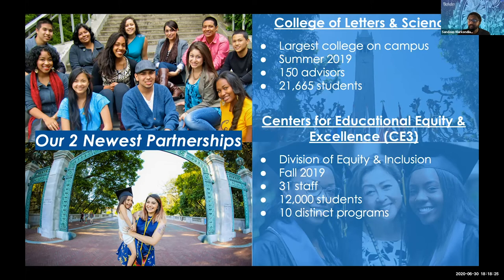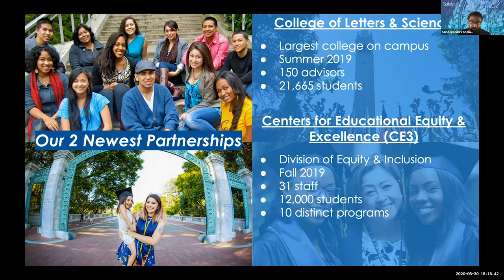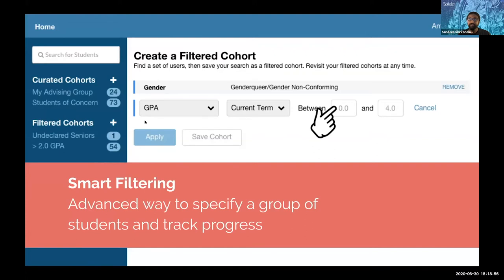Our newest partners are the College of Letters and Science — our biggest group — about 150 advisors and 22,000 students. In reality, we are touching most of the student population in combination across the colleges. We are also working with the Centers for Educational Equity and Excellence, mainly to identify students who are admitted or already in the system and how the division of equity and inclusion can help them by looking at their day-to-day progress within Berkeley.